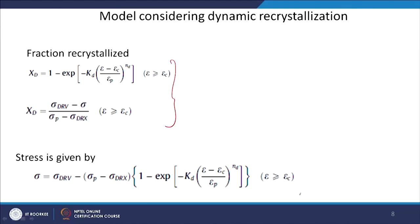Combining the fraction recrystallized from the stress-strain curve and from the Avrami kinetics together, you get an equation: sigma = sigma_drv − (sigma_p − sigma_drx) × [1 − exp(−kd × (remaining term))]. The fraction recrystallized was found from two different approaches, equated, and used to find the stress of the system at any particular point. This is a physically-based model which considers dynamic recrystallization.